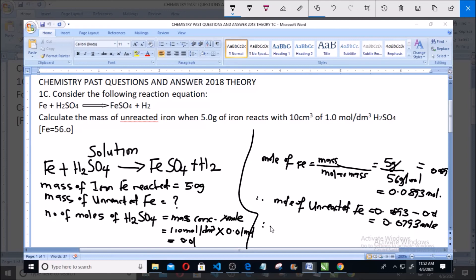Then mass of unreacted iron is equals to 0.0793 multiplied by 56 which is equals to 4.44 gram. So therefore the mass of unreacted iron is equals to 4.44 gram. Thank you, if you like this please click like and subscribe, God bless you.